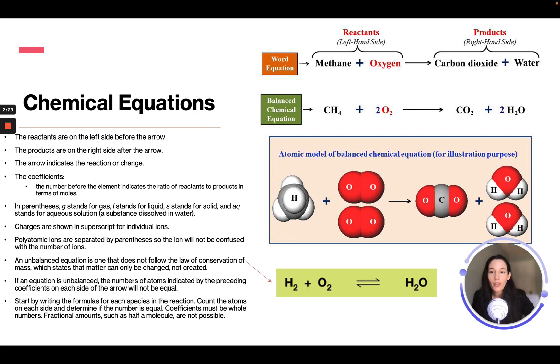The coefficients are the number before the element and indicate the ratio of reactants, so we have two oxygen O2 molecules. In parentheses, G stands for gas, L stands for liquid, S stands for solid, and AQ stands for aqueous solution, which is a substance dissolved in water. We actually don't see that in the example.